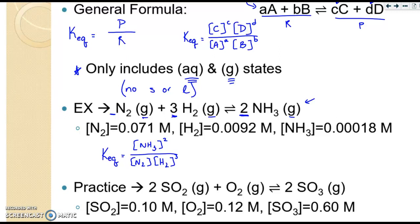The other part of this would be potentially to calculate K. And you'll be provided with information like this, so different molarities, different concentrations. And then you would just plug these numbers in to your KEQ expression. So K will equal .00018 for the NH3 squared, divided by .071 for the N2, times the .0092 for the H2 cubed. And you'll plug that in your calculator, and you should get about 0.59. K does not have a unit.